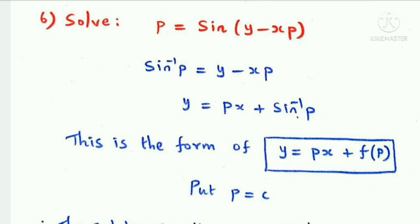Next question: solve p = sin(y - xp). Taking sin inverse gives sin⁻¹p = y - xp. Moving -xp to the left, y = px + sin⁻¹p, which is of the form y = px + f(p).